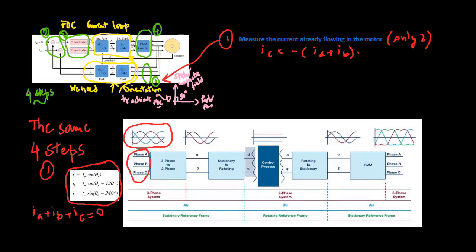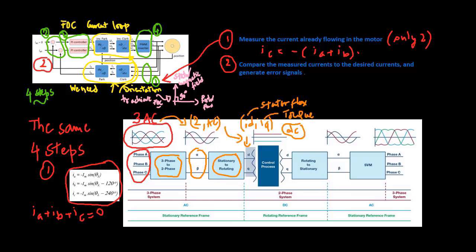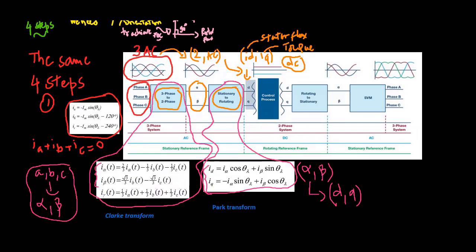These same four steps are also used to do FOC on an AC motor. The main difference is that since AC motors do not have brushes and a commutator, the process must also include the orientation part of the job. Step 1: measure the current already flowing in the motor. In the case of a three-phase permanent magnet synchronous motor, we have three currents to control, but for the FOC algorithm we only need to measure two of these currents. Step 2: compare the measured currents to the desired currents and generate error signals. The desired currents ID and IQ are DC currents, while the measured currents are AC currents.